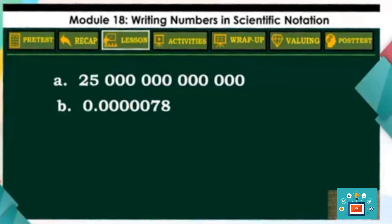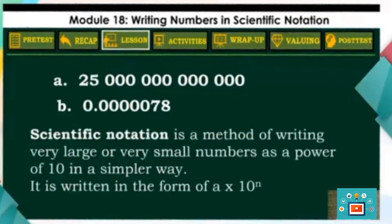Yes, there is what we call scientific notation. It is a method of writing very large or very small numbers as a power of 10 in a simpler way. It is written in the form of A times 10 raised to the N power.